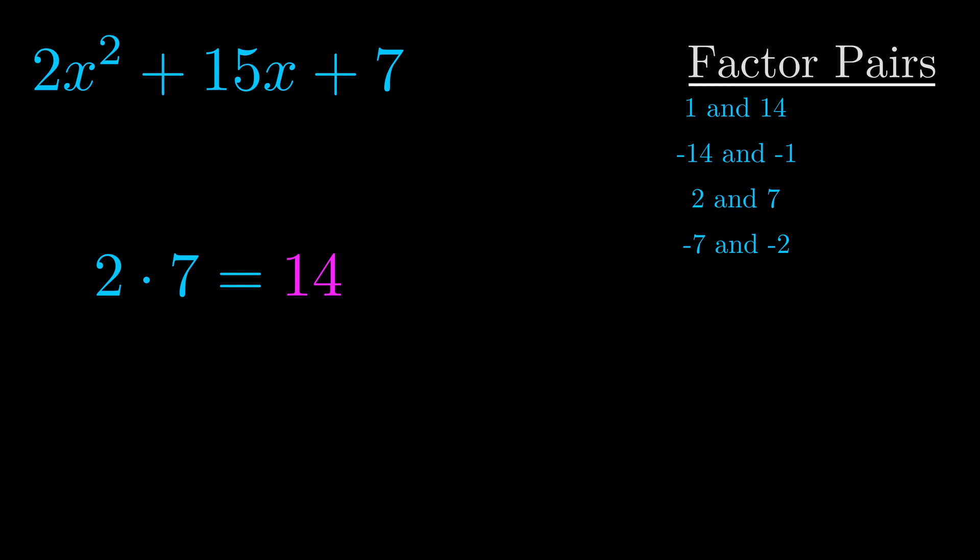The b value is the coefficient on the x term. That's the middle term, the one that we haven't done anything with yet. And really this is the only factor pair that we need.